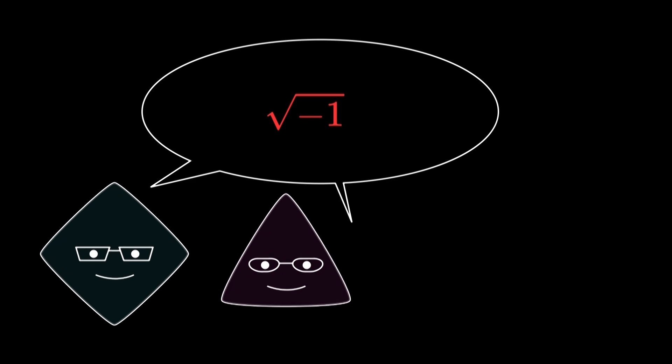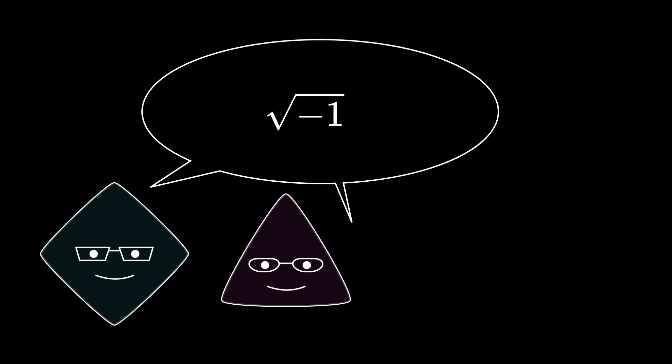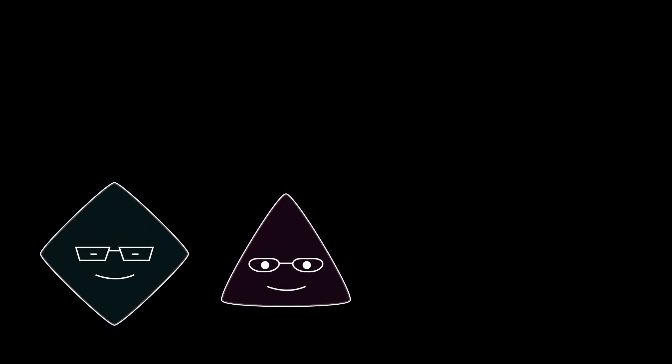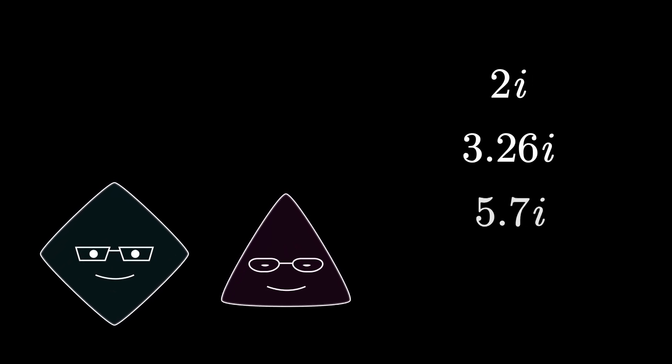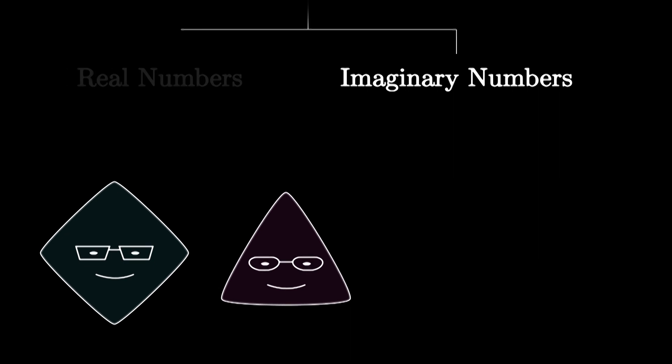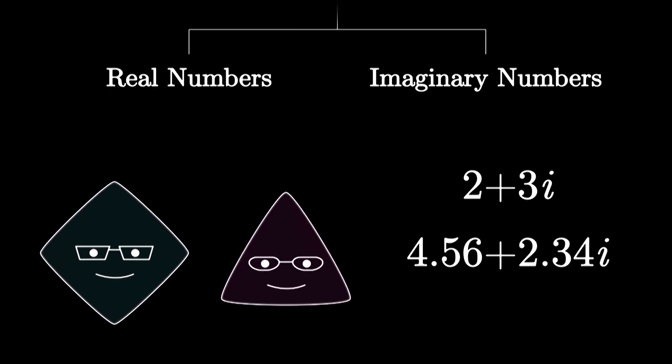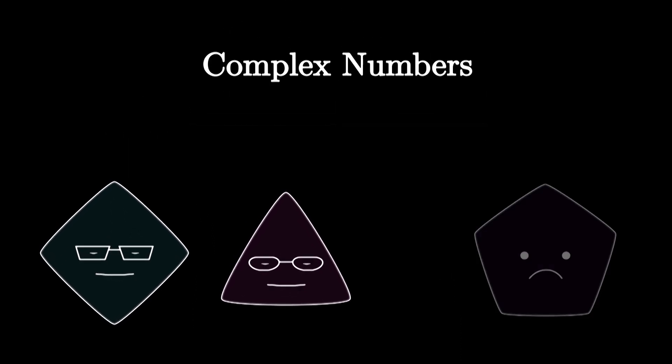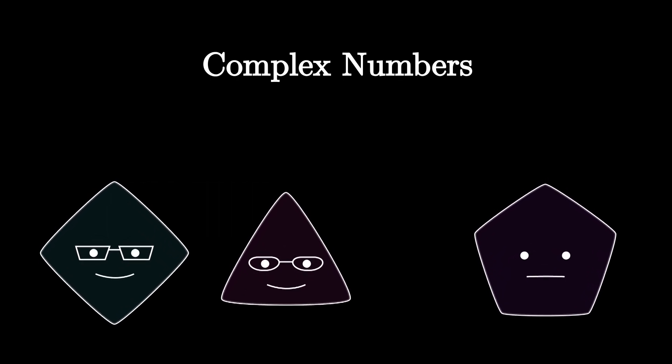That's why minus 1 cannot have a square root. But what mathematicians did was unexpected. They defined square root of negative 1 as a separate number by itself and symbolized it as i. So the numbers having i as a multiple, for example 2i, 3.26 times i, 5.7 times i, were called the imaginary numbers. And the combination of the real and imaginary numbers, like 2 plus 3i, 4.56 plus 2.34i, were called the complex numbers.